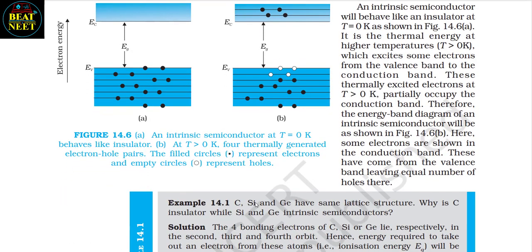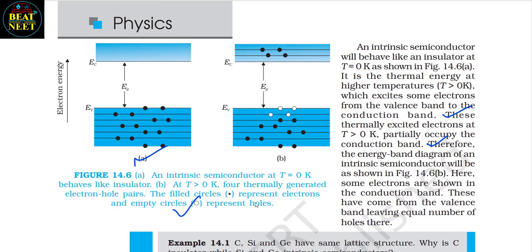An intrinsic semiconductor will behave like an insulator at T = 0 K (figure 14.6a). It is thermal energy at higher temperature (T > 0 K) which excites some electrons from the valence band to the conduction band. These thermally excited electrons at T > 0 K partially occupy the conduction band. Therefore, the energy band diagram of an intrinsic semiconductor is as shown in figure 14.6b, where some electrons are shown in the conduction band and an equal number of holes are left in the valence band.